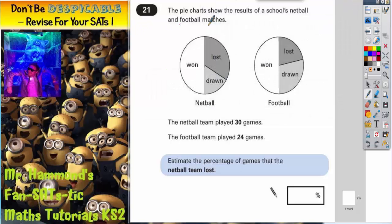Question 21. The pie charts show the results of a school's netball and football matches. Netball's on the left, football's on the right, and we've got won, lost, and drawn. The netball team played 30 games, the football team played 24 games. Estimate the percentage of games that the netball team lost.